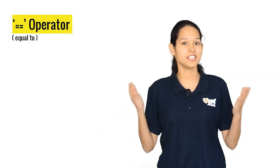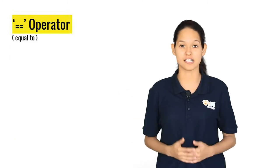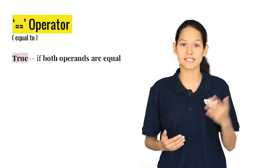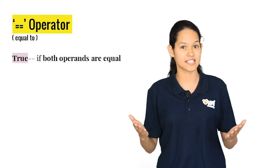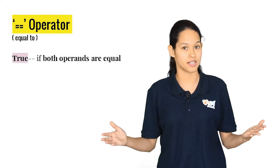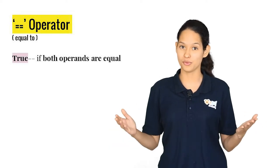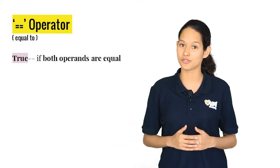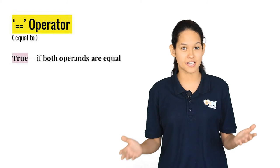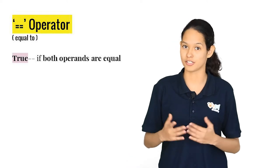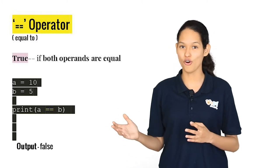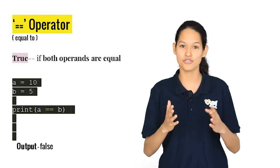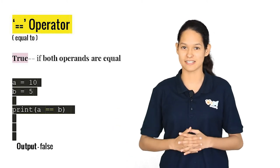Now we have the equal to operator. It compares both the operands and checks if they are equal. If they are equal, it returns the value true; else it returns false. You can try the block of code and see what results you get.